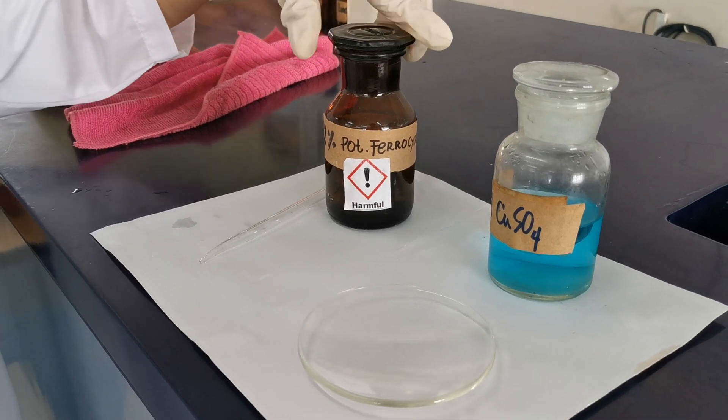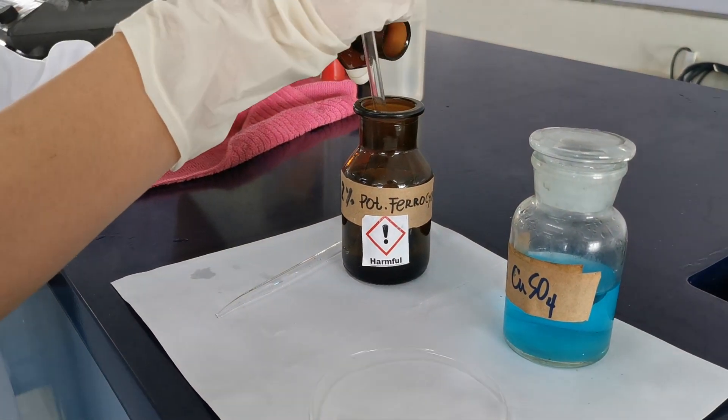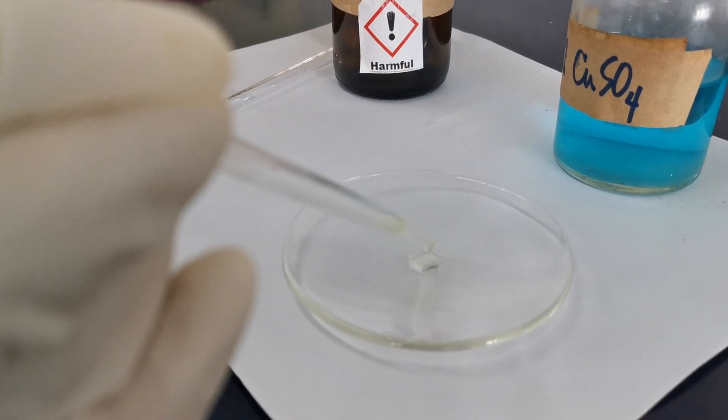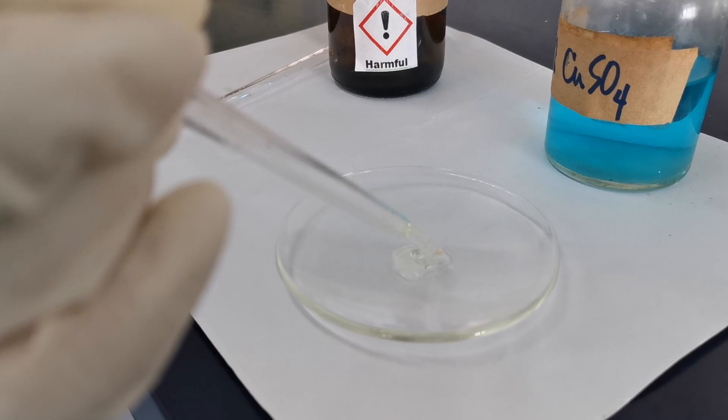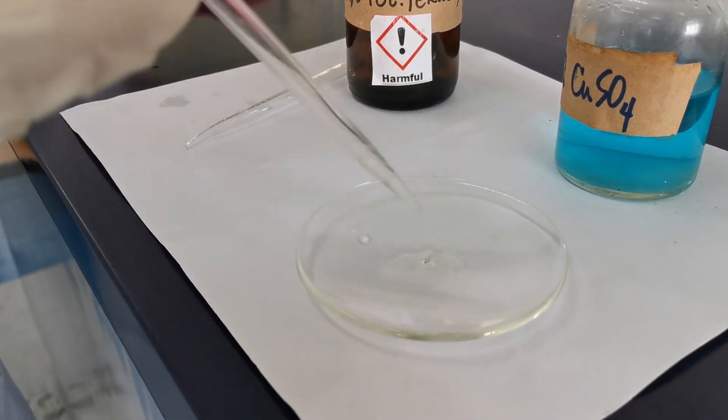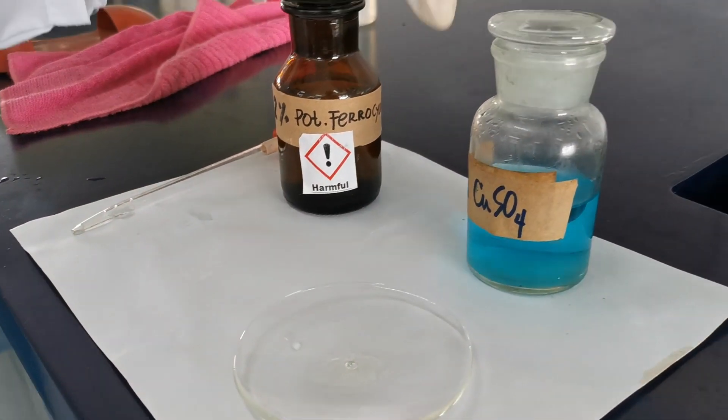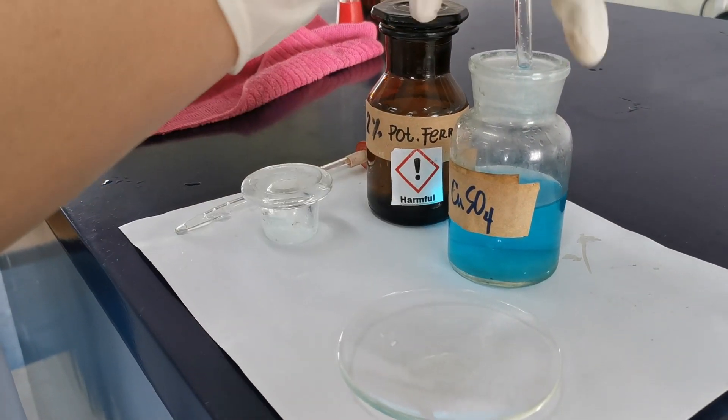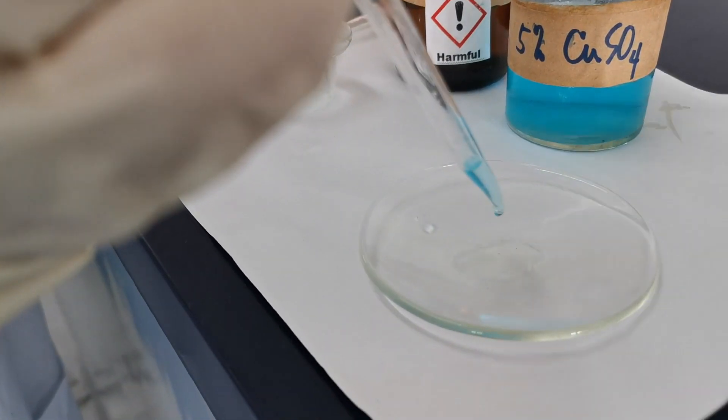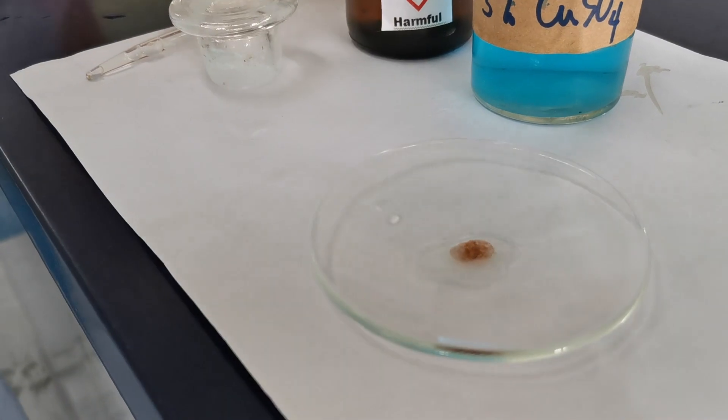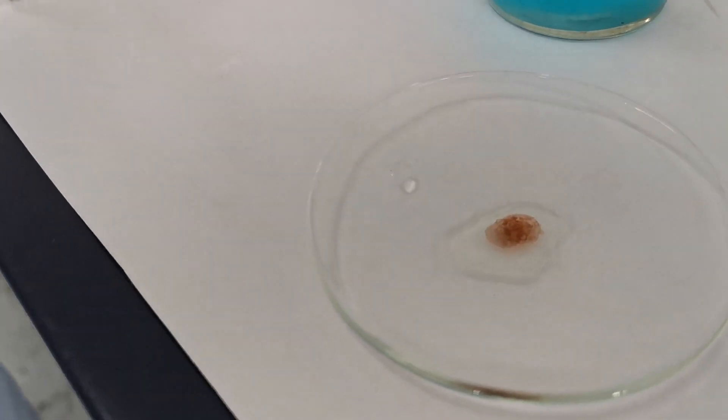Next, with a medicine dropper or pipette, carefully place a small drop of 5% copper sulfate solution on a watch glass containing 2% potassium ferrocyanide solution. A membrane forms around the copper sulfate drop. This membrane is semi-permeable. That is, it is permeable to water molecules but not to the solutes present.